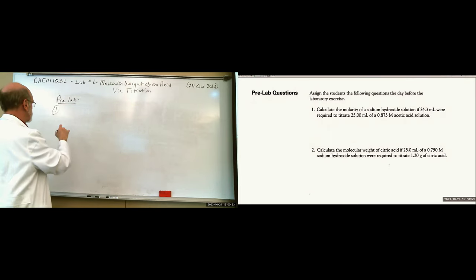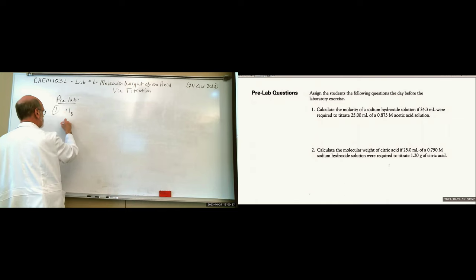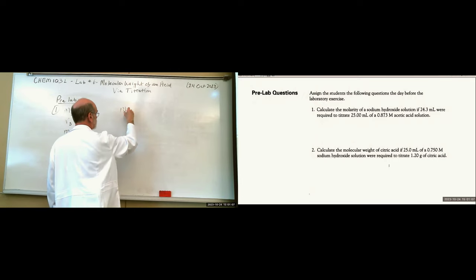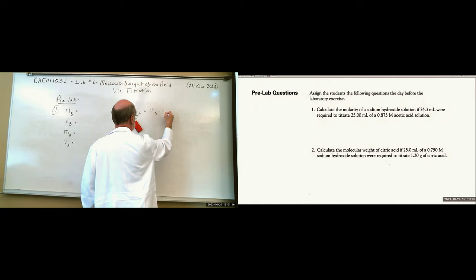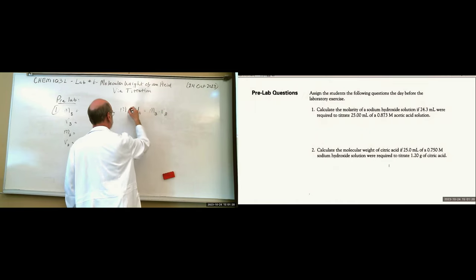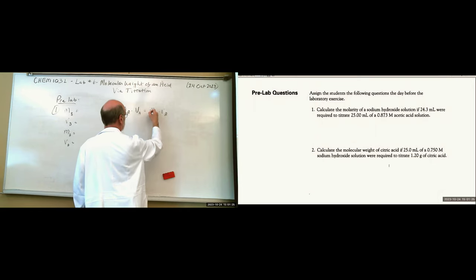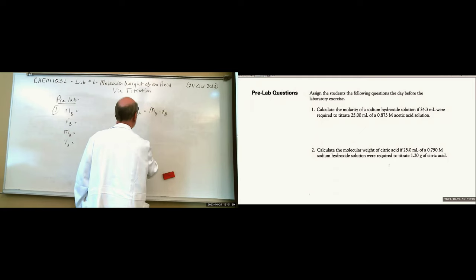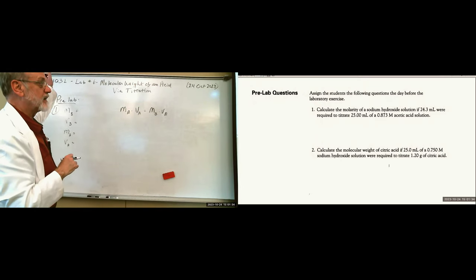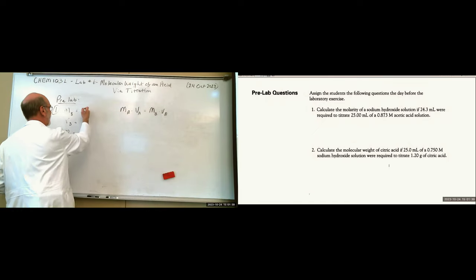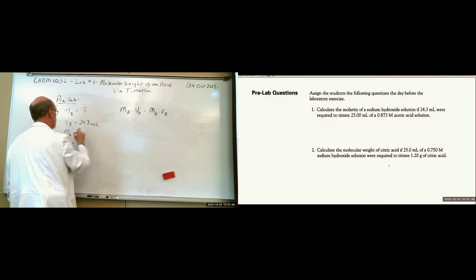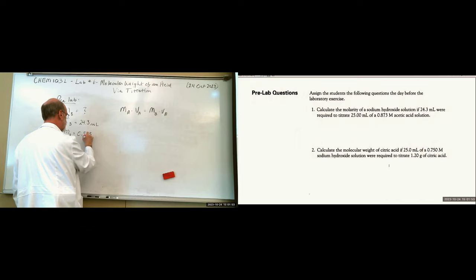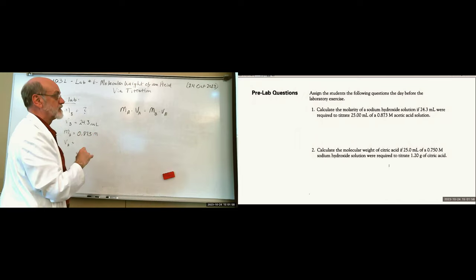What are we given? We need molarity of base, volume of base, molarity of acid, and volume of acid. In this case they're one-to-one so we can use that formula: molarity of acid times volume of acid equals molarity of base times volume of base. Molarity of base is unknown; volume of base is 24.3 milliliters; molarity of acid is 0.873 molar; volume of acid is 25 milliliters.